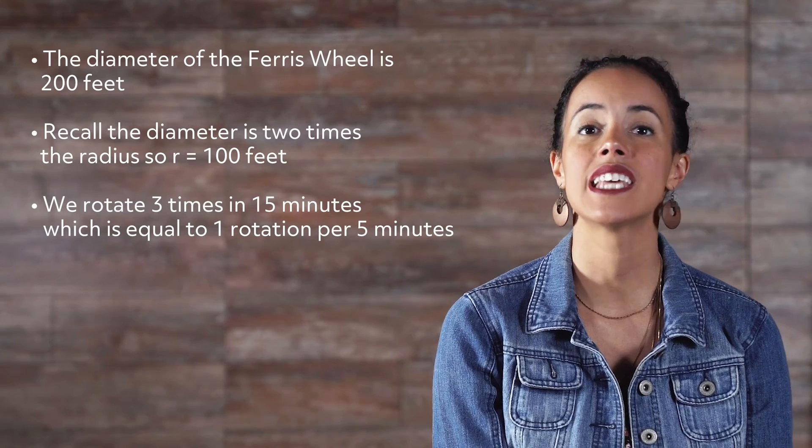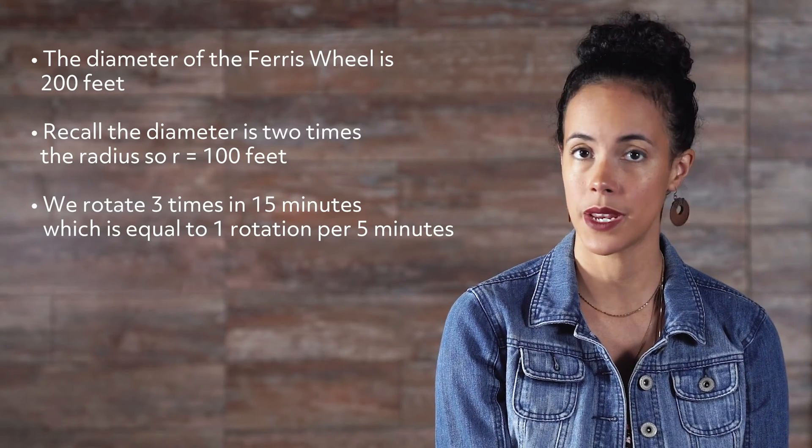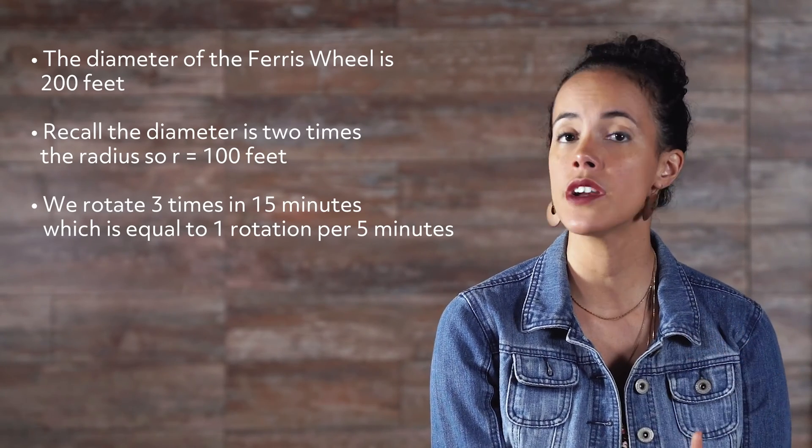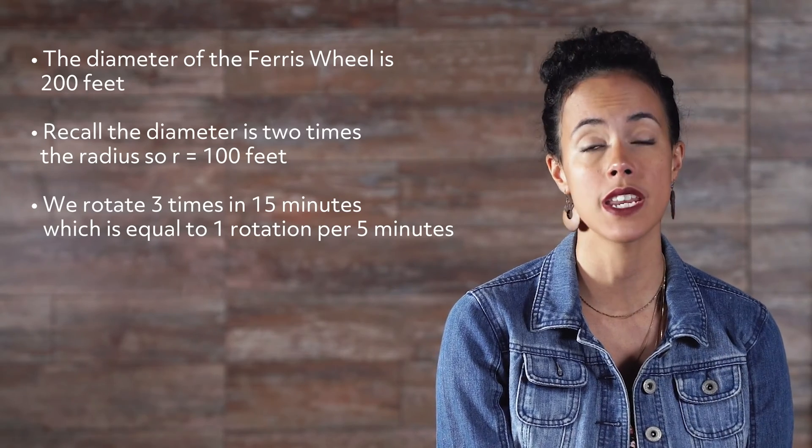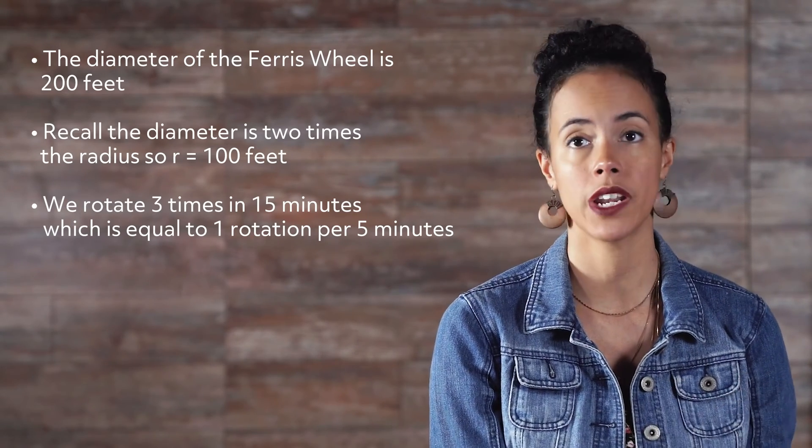First, we are given the diameter of the ferris wheel, not the radius. Recall, the diameter of a circle is 2 times the radius, so r equals 100 feet. Next, we need to figure out how fast we are rotating.